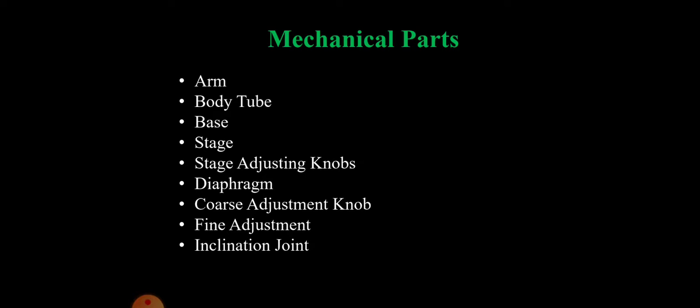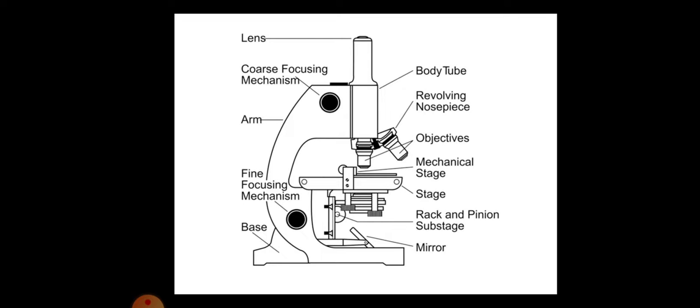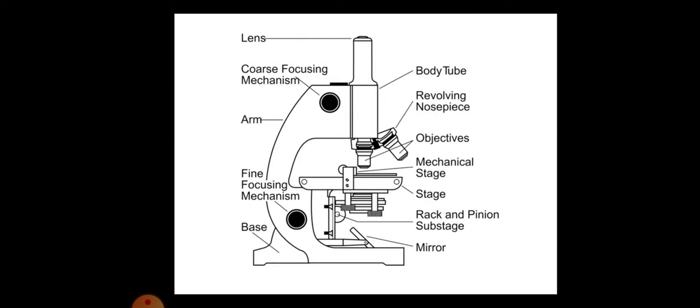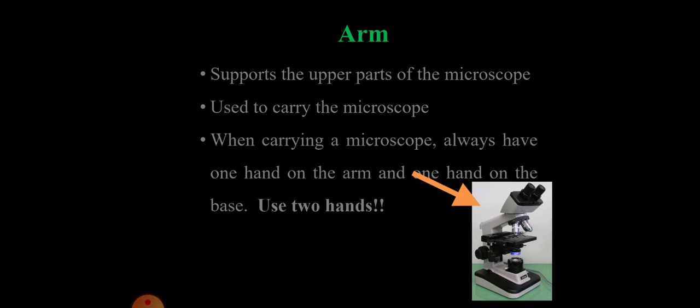See, this is a structure of microscope. The microscope has different parts of optical parts as well as mechanical parts. First we take arm. Arm supports the upper parts of the microscope.